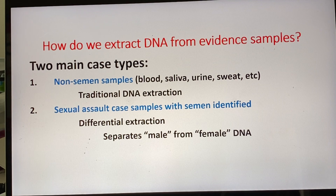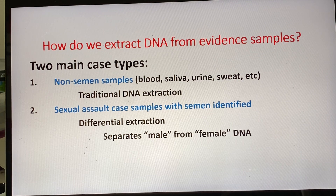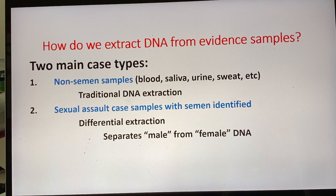We divide DNA extractions into two main case types: semen and non-semen. When we're talking about non-semen samples, it's basically everything but semen — blood, saliva, urine, perspiration, meaning there are some cells shed in the perspiration, feces, vomit — anything not semen-related, we're going to use a traditional DNA extraction.